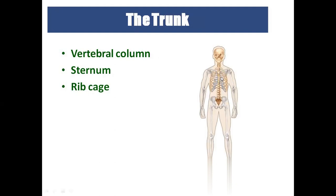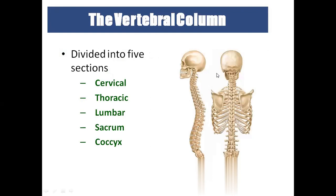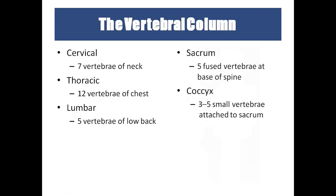In the trunk, we have the vertebral column, sternum, and ribcage. The vertebral column has five regions: cervical, thoracic, lumbar, sacral, and coccyx — a total of 33 vertebrae. Seven are cervical, twelve are thoracic, five are lumbar, five are sacral (fused into one bone called the sacrum), and three to four small vertebrae form the tailbone called the coccyx.